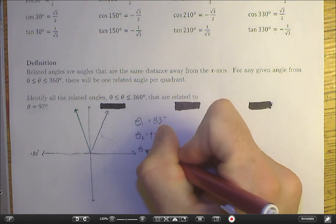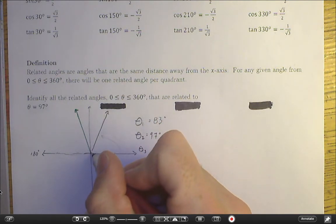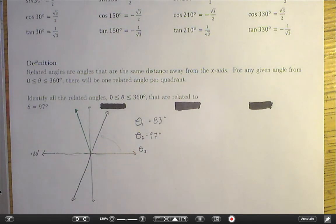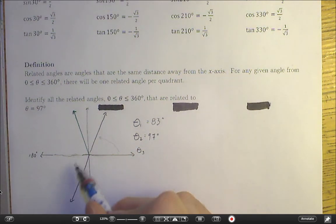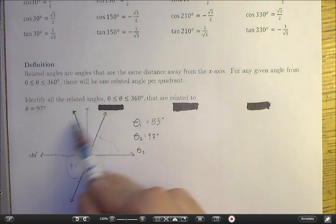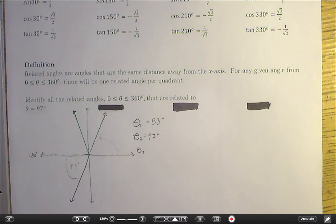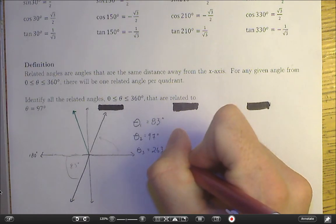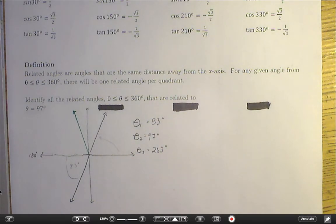So my quadrant 3 related angle will look like this. How far away is this from the x-axis? Well, it is still 83 degrees, but now it is 180 plus 83 degrees, which is 263 degrees.